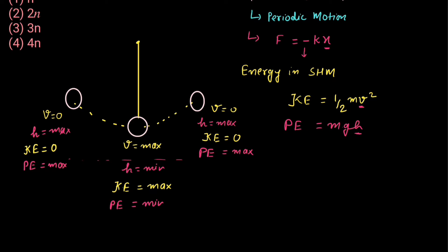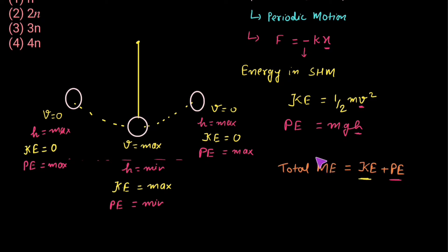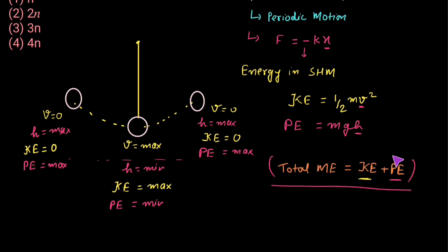An important point to understand: because this system has both kinetic energy and potential energy, the energy of such a system can be described in terms of total mechanical energy. Mechanical energy is the sum of kinetic energy plus potential energy. Although kinetic energy and potential energy are both variable, the total mechanical energy at any point of the motion would be constant — when kinetic energy is minimum, potential energy is maximum, and vice versa, so their sum remains constant.